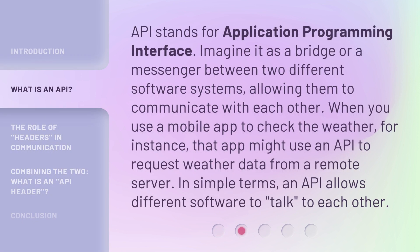API stands for Application Programming Interface. Imagine it as a bridge or a messenger between two different software systems, allowing them to communicate with each other. When you use a mobile app to check the weather, for instance, that app might use an API to request weather data from a remote server. In simple terms, an API allows different software to talk to each other.